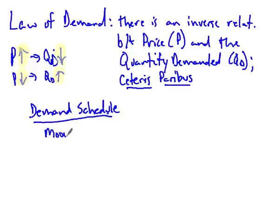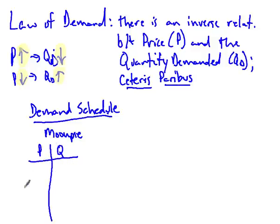Let's do one for Moon Pies — an exceptional treat after a mountain bike ride. We'll put the price on one side and the quantity demanded on the other side. I'll make up the numbers. At $0.75, people would want to buy 100. Make sure you label the column precisely as 'quantity demanded,' not just 'quantity.'